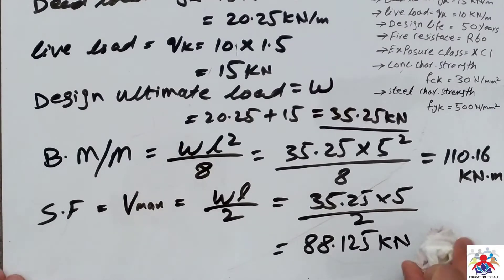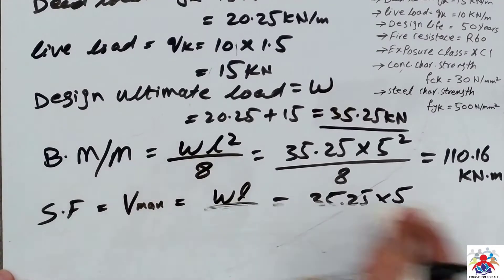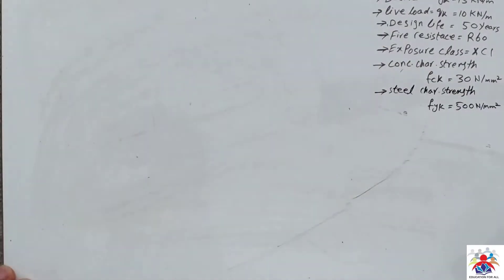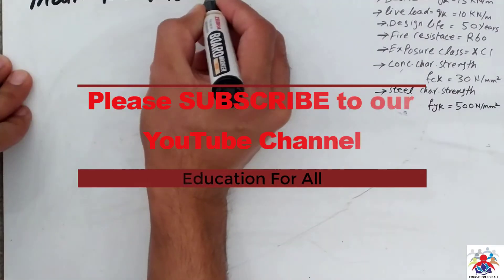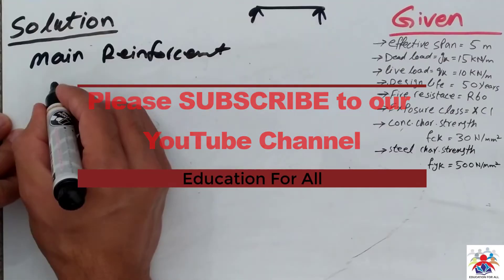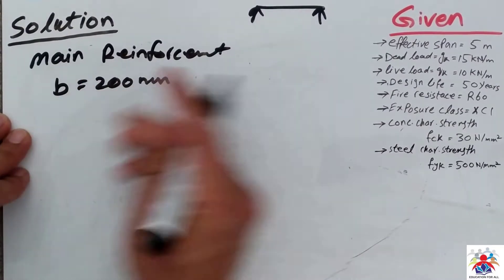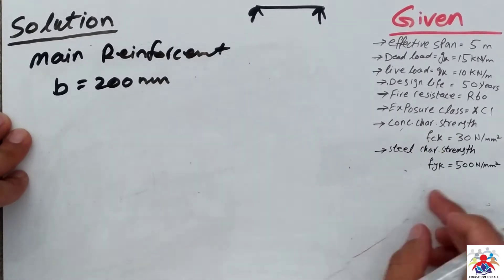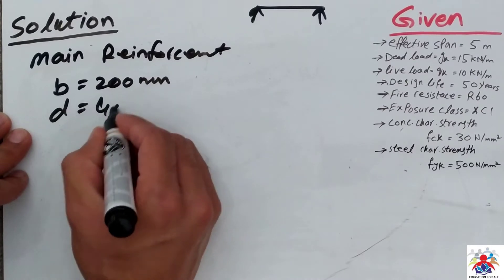Based on these values we will calculate our main reinforcement. The next step is main reinforcement. The width of our beam is 200 millimeters and the depth or height is 400 millimeters.